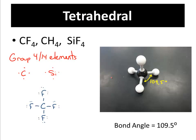The first shape we're going to look at is known as tetrahedral. Tetra is a prefix that technically means four, like Tetris. Coming off of the central atom, you have one, two, three, four — four bonds. You have a central atom and there are four bonds coming off of it. You see this typically in group 4 or 14 elements.